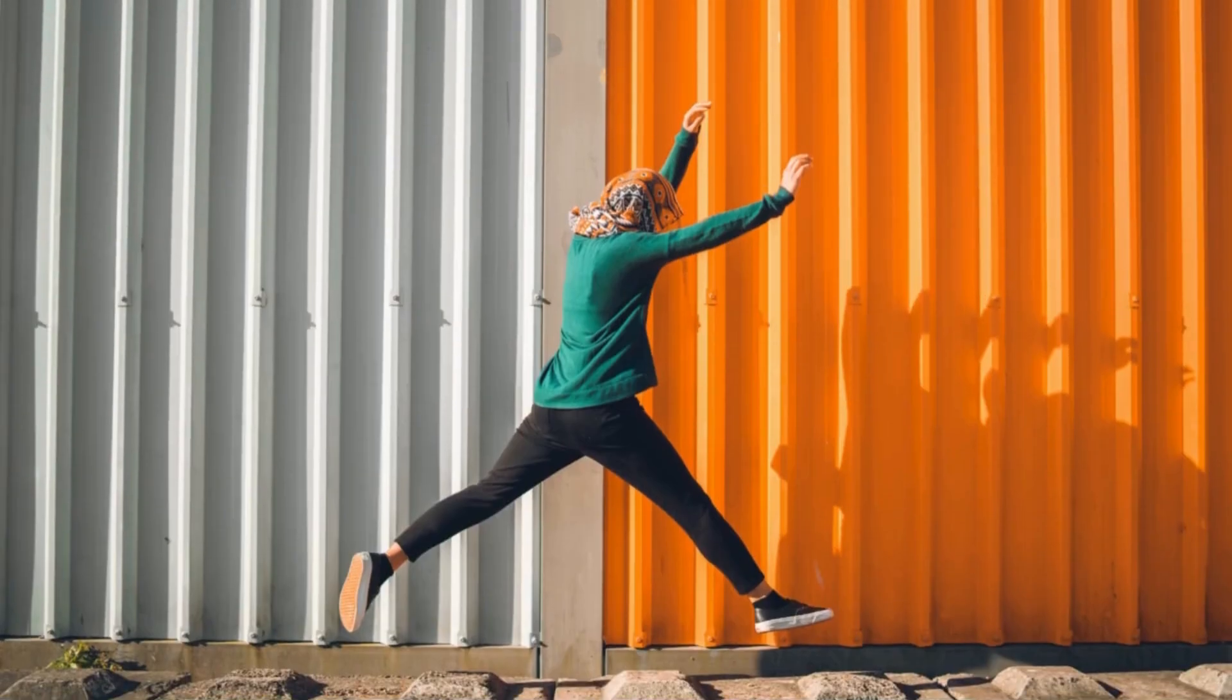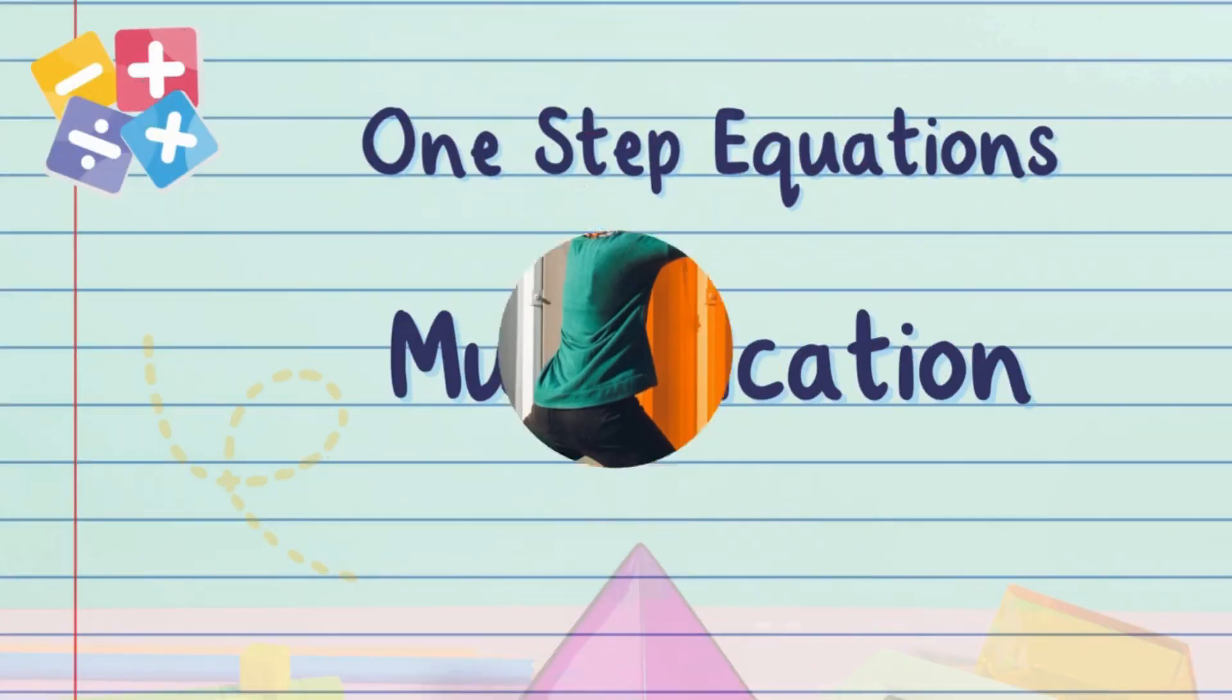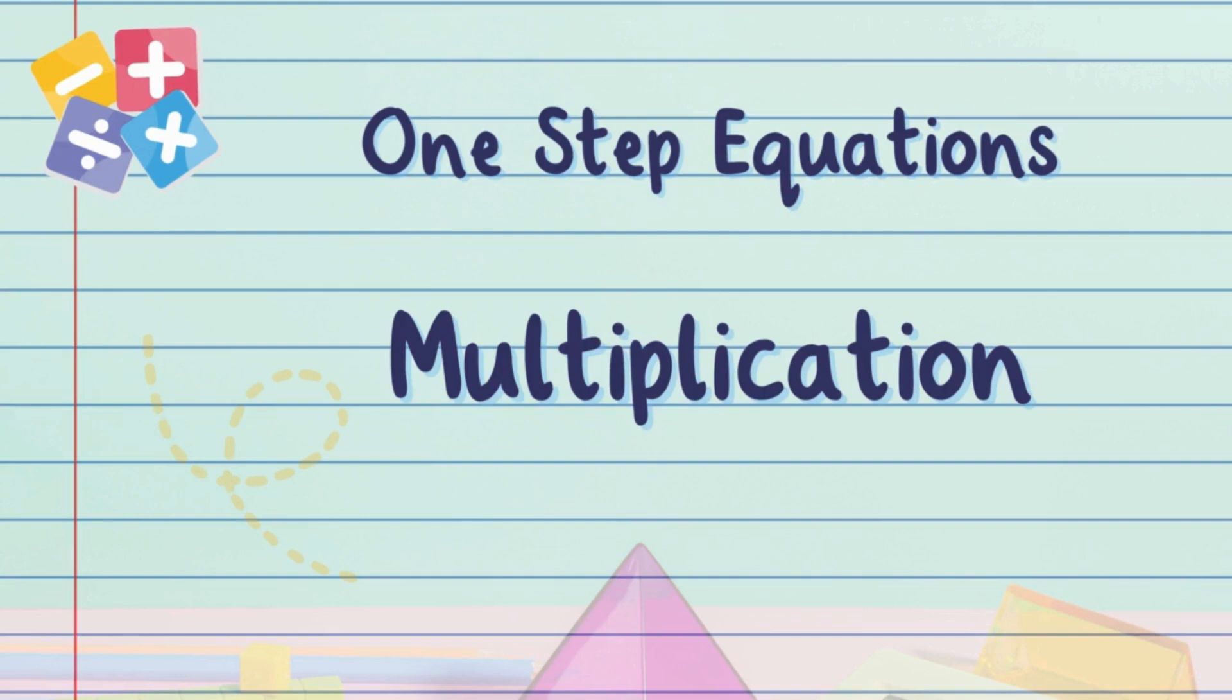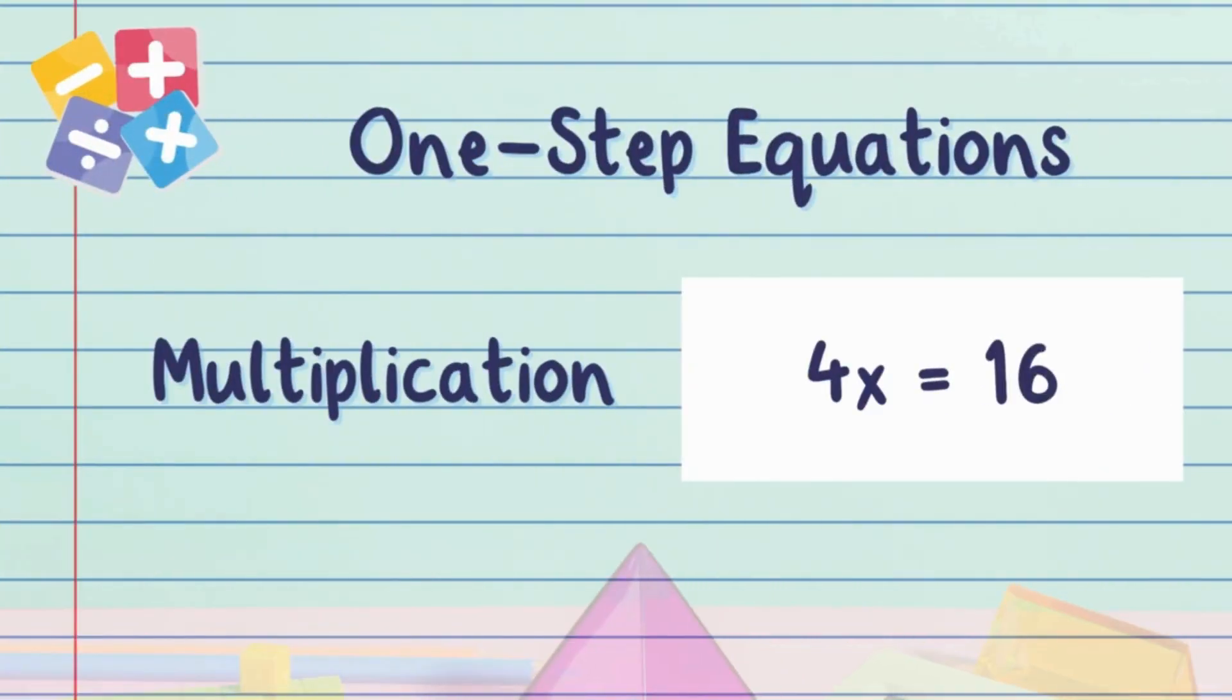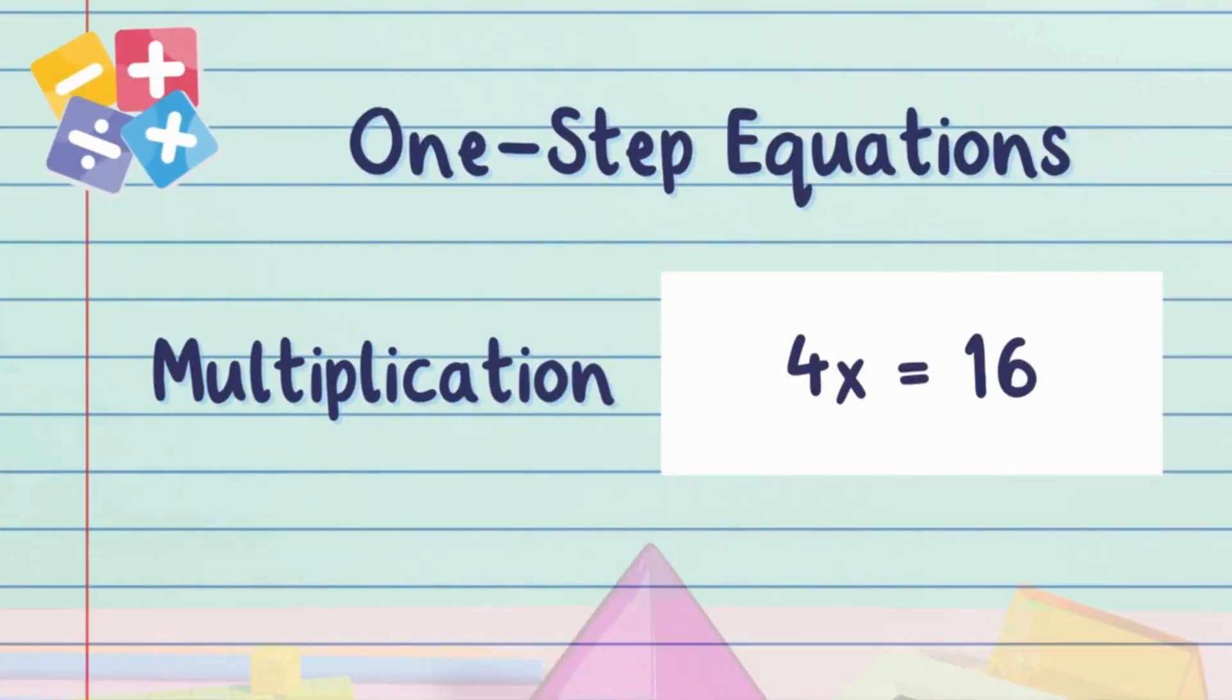One step and you're done! Now, what happens if the equation involves multiplication? Let's check out this one: 4x = 16. Here, the 4x means 4 times x, but we want x by itself.